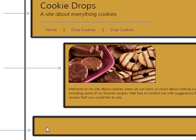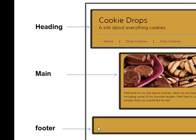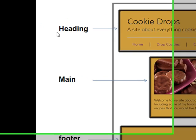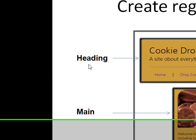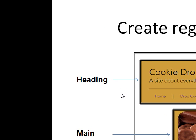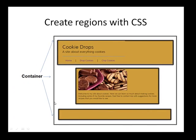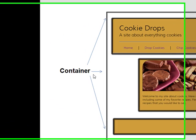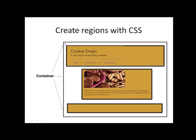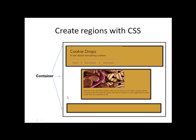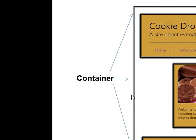The footer is where you might put something like 'this website was designed by,' or maybe even a second navigation. These are standard names, but the regions can actually be called whatever you want. Then all of these regions are going to go inside another region we're going to call container — sometimes we'll call it a wrapper.